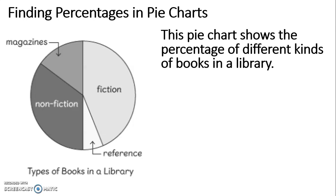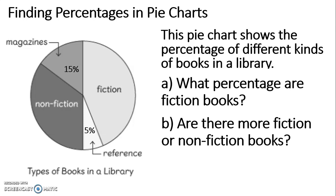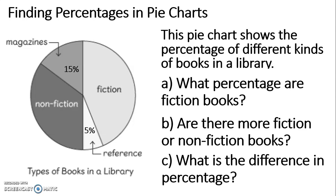This pie chart shows the percentage of different kinds of books in a library. The magazines are 15% and the reference books are 5%. We do not know the percentage of non-fiction books and the percentage of fiction books. Here are the three questions on this pie chart: A — what percentage of those books are fiction? B — are there more fiction or non-fiction books? C — what is the difference in percentage between the fiction and non-fiction books?